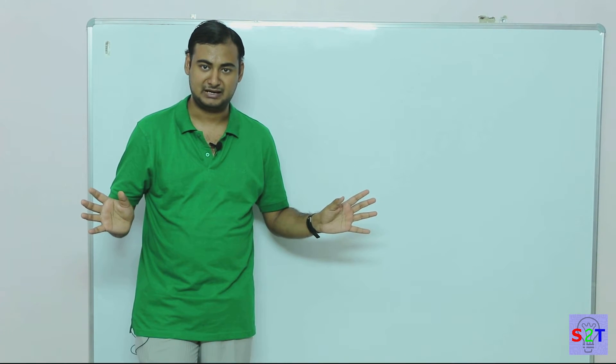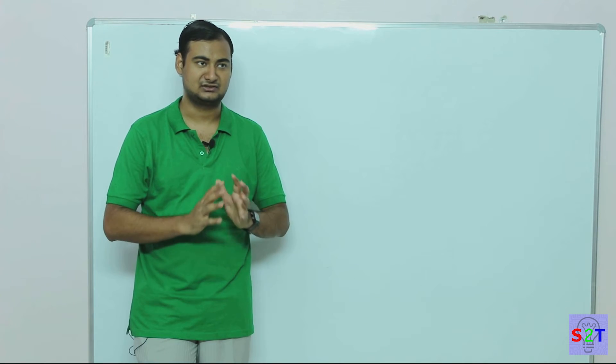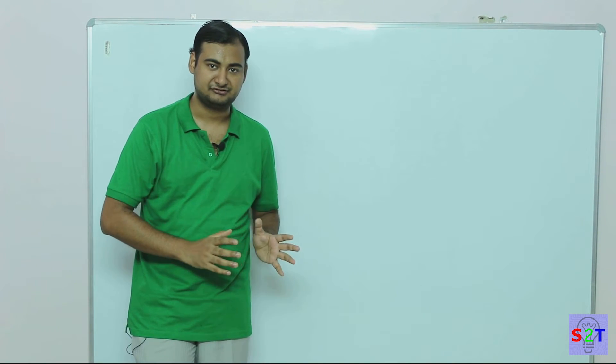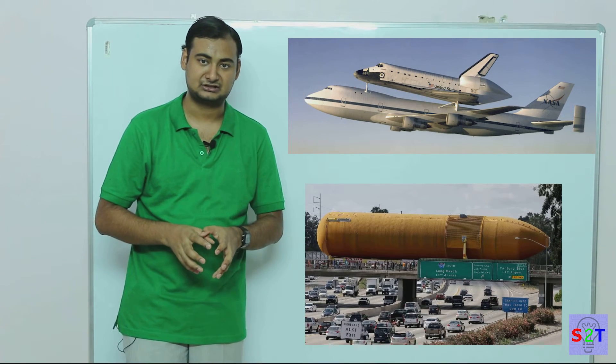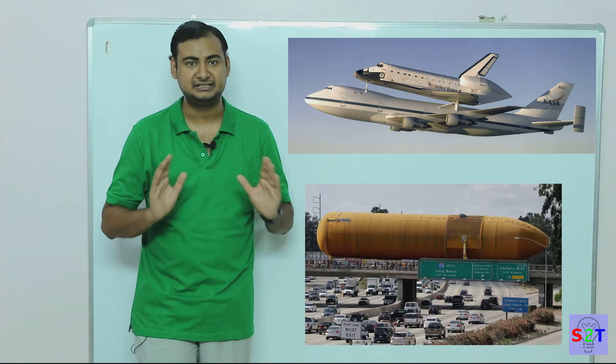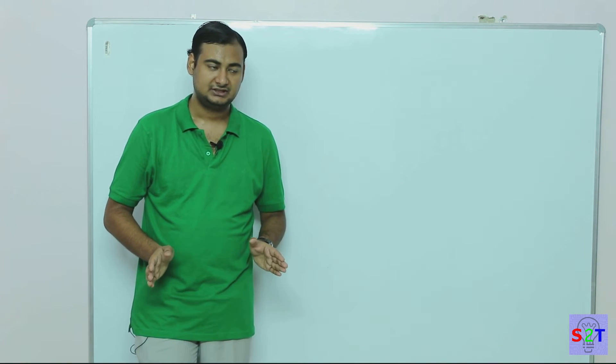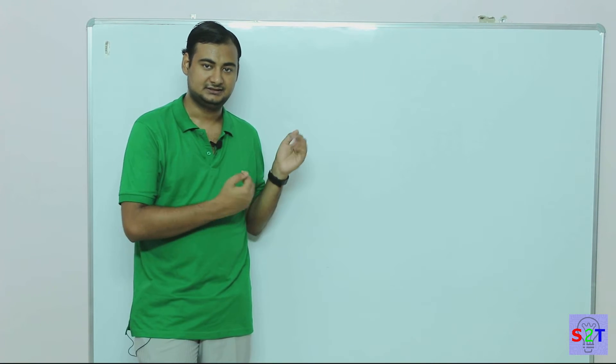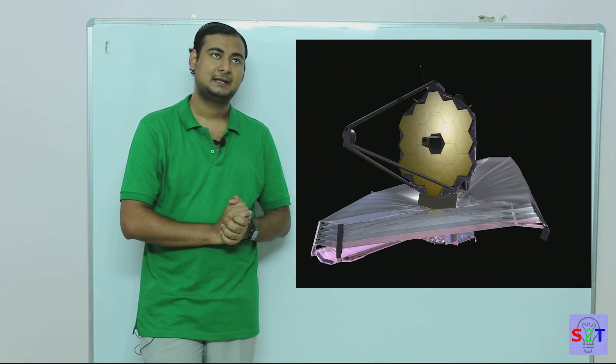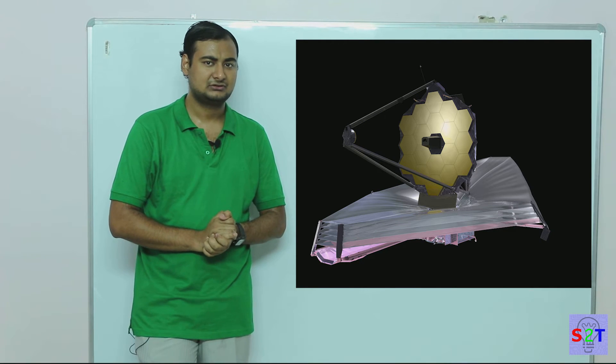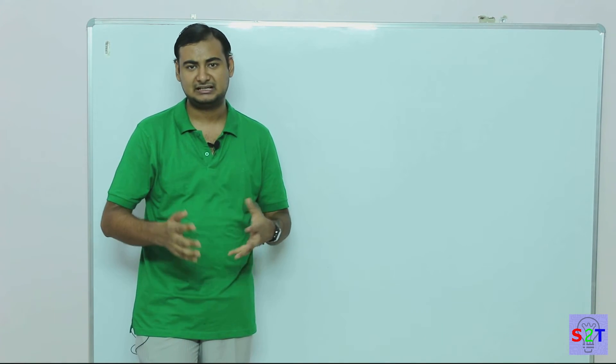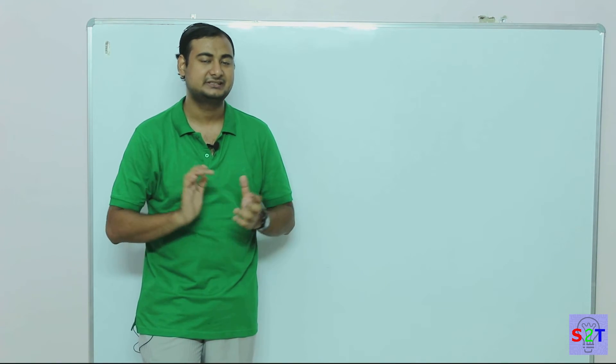And this James Webb telescope was supposed to be built at the cost of five hundred million dollars. Now people are like, 'Okay, that's a guess, budget's probably one billion dollars.'